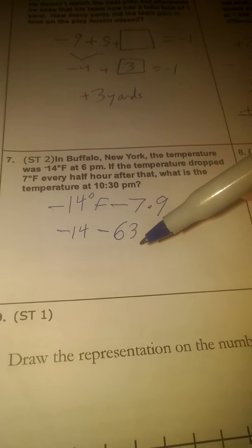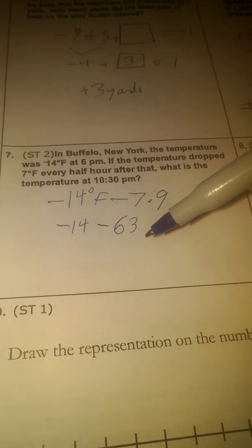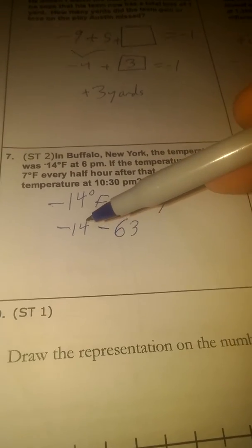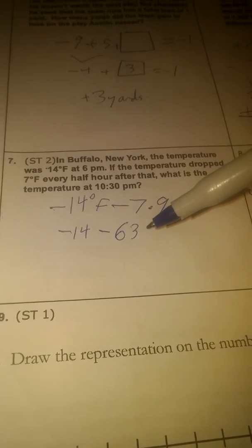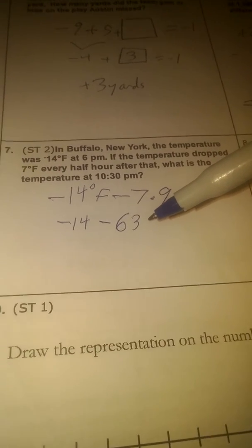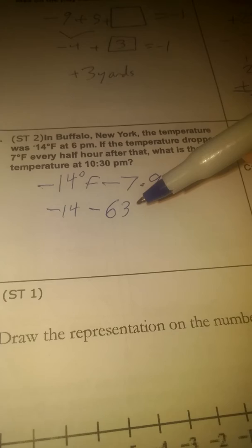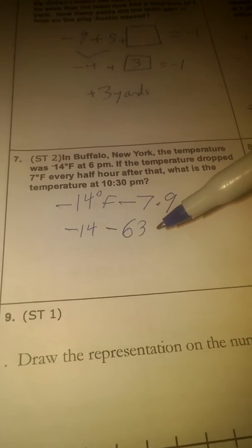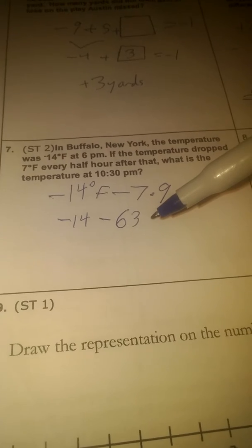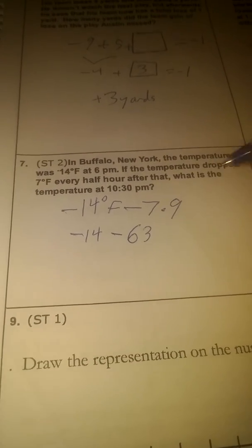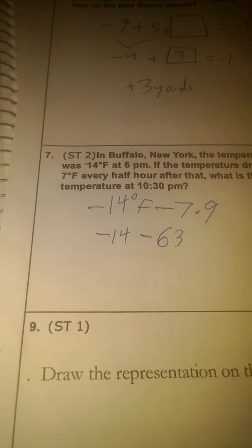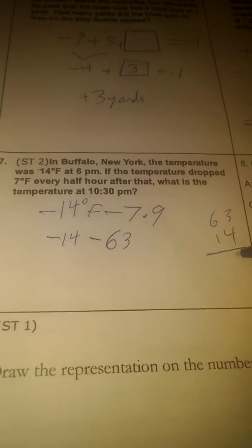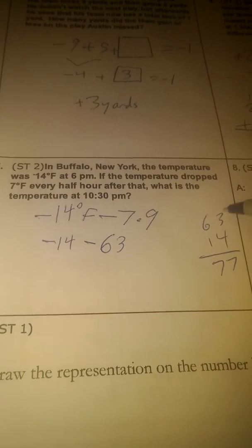If you think of this as a difference, we're trying to figure out how much bigger negative 14 is than 63. Well, negative 14 isn't bigger than 63. It's much smaller, so we're going to do the opposite. So 63 plus 14 will give us 7 and 7. That's 77 degrees of difference. We're going down, so it's negative 77 degrees Fahrenheit.